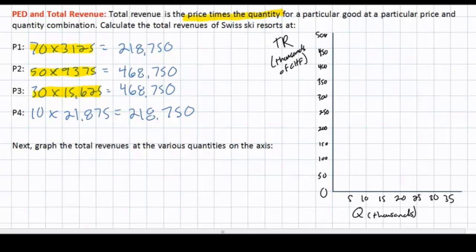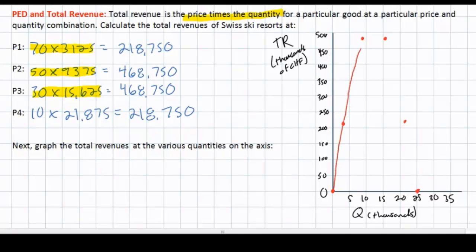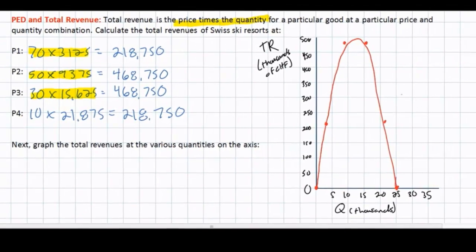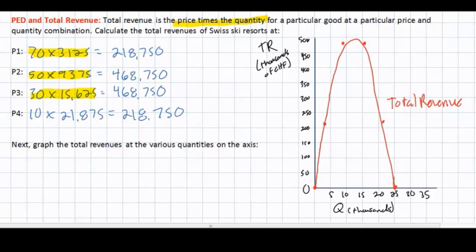If we plot these points on a total revenue diagram — with quantity on the horizontal axis and total revenue on the vertical axis — we can see what happens to total revenue as quantity increases and price decreases. We plot four identified points plus two additional points: at a price of zero, quantity is 25,000 so total revenue is zero; and at a price of 80 francs, quantity is zero so total revenue is also zero. Connecting these six points gives us a total revenue curve for the ski market in Switzerland — an inverted-U shape where total revenue first increases, plateaus, and then decreases as quantity increases.